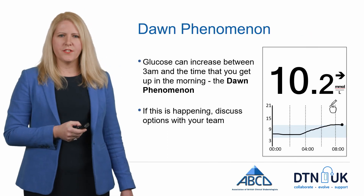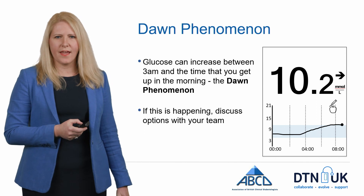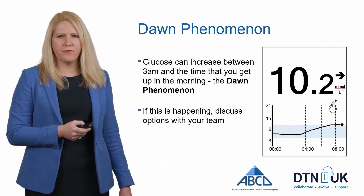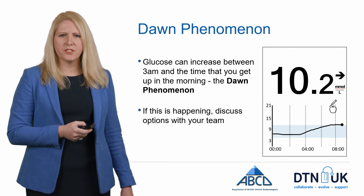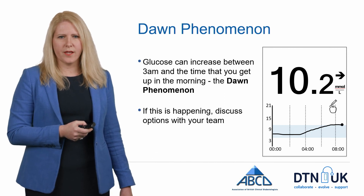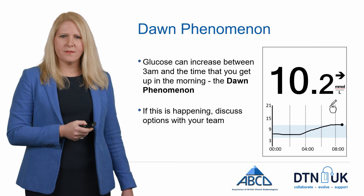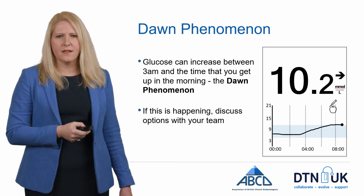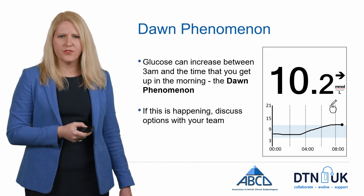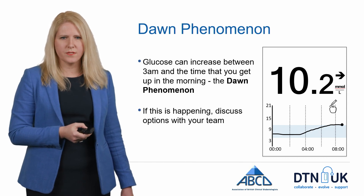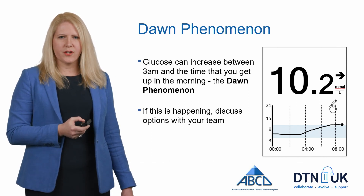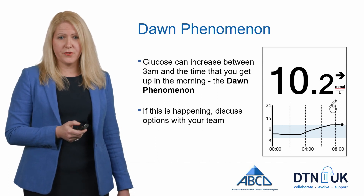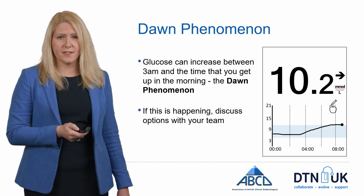If you notice that your glucose levels take off during the night and you wake up with a high glucose, you may have something called the dawn phenomenon — the glucose starts to rise before you get up in the morning. This can be tricky to manage, as increasing your basal overnight increases the risk of hypoglycemia. If this is something you're struggling with, talk to your diabetes team, as there may be other options such as insulin pump therapy.